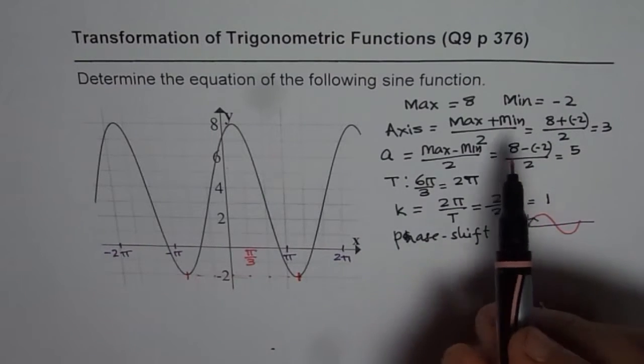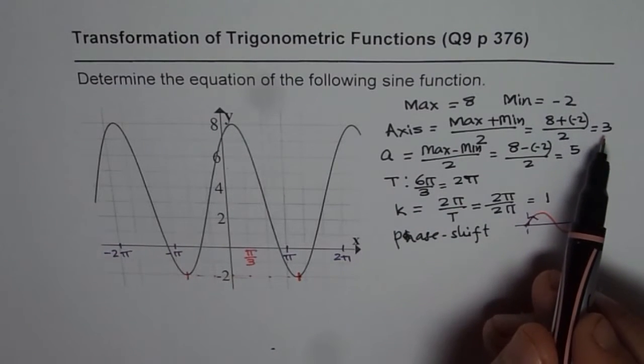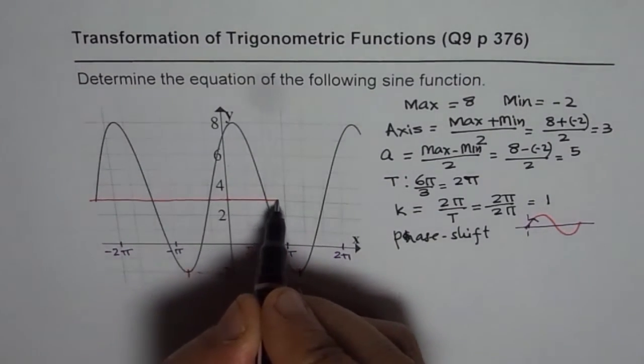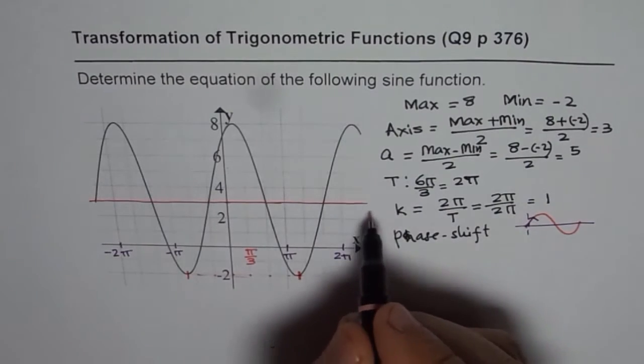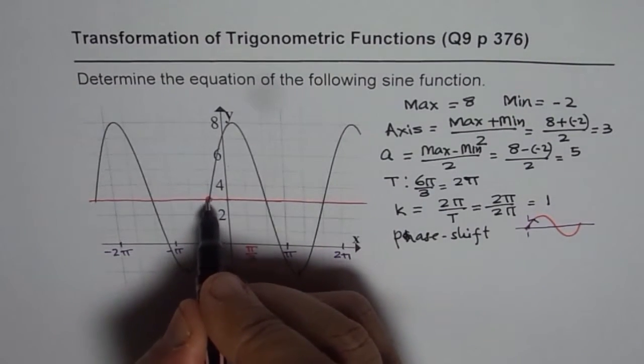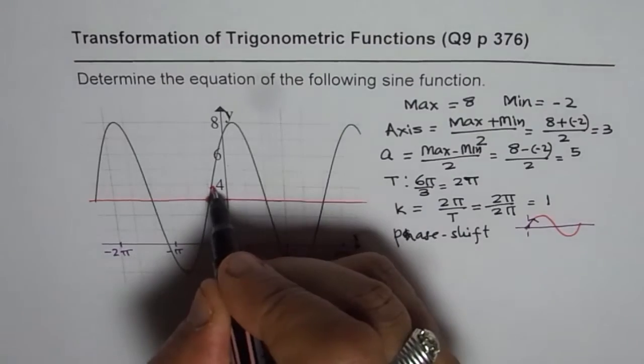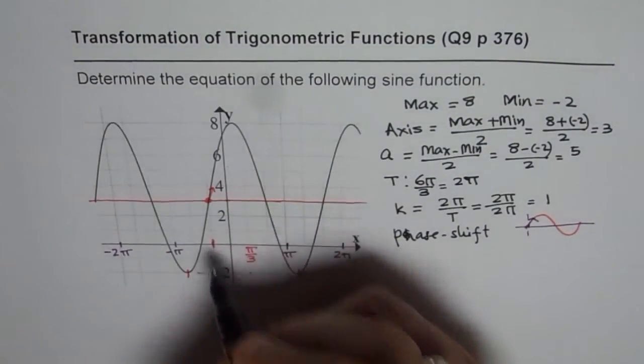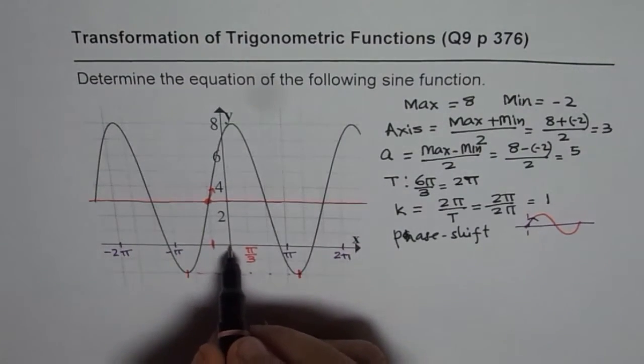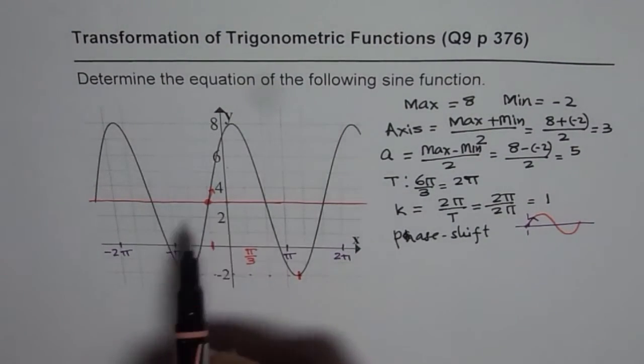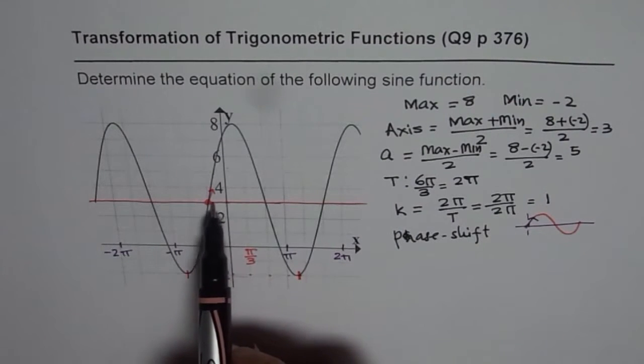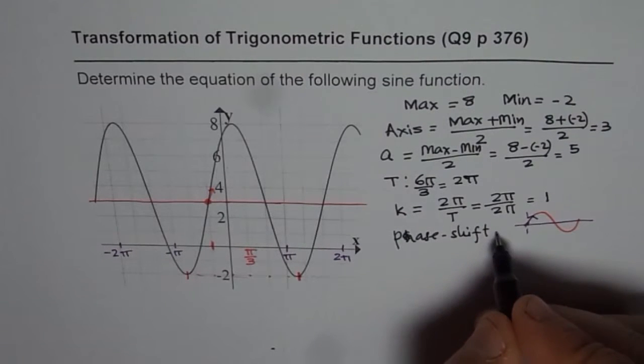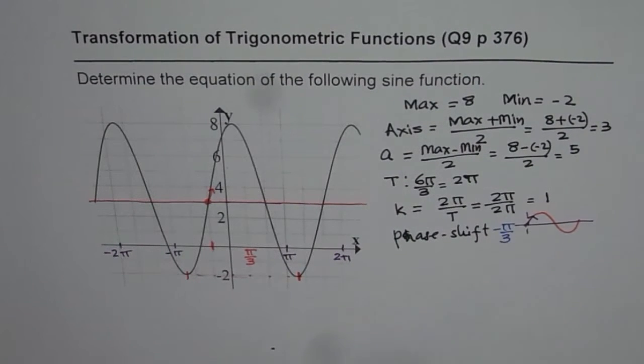So let us sketch the axis of the graph, which is at 3. So this is 3. So that means the axis is right there. Now if you see, on the axis, that is the point from where the sine function starts. Now this point happens to be π by 3 before the origin. That means the sine graph has been shifted π by 3 units to the left. And therefore, the phase shift should be minus π by 3.